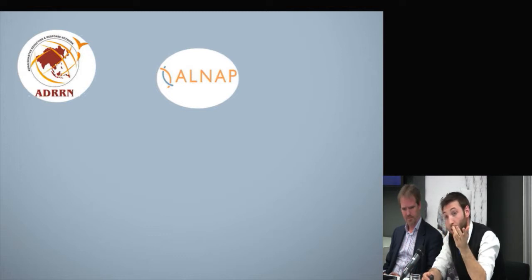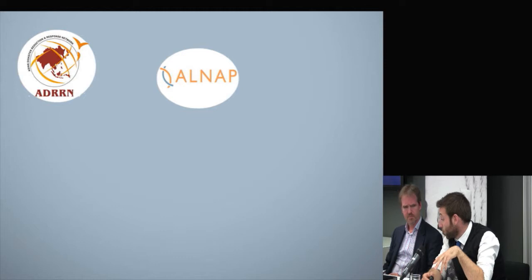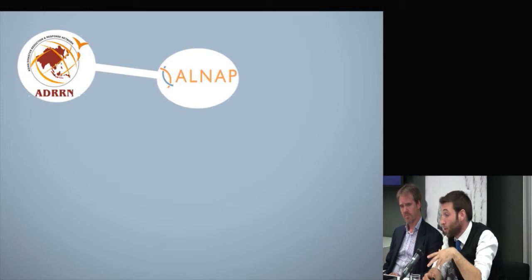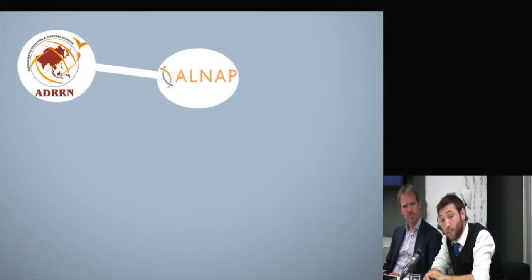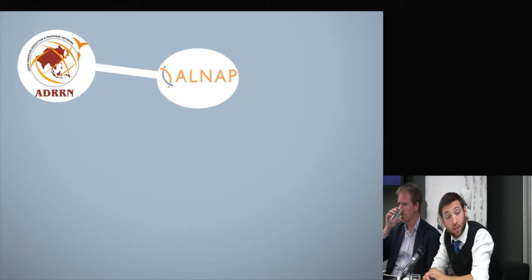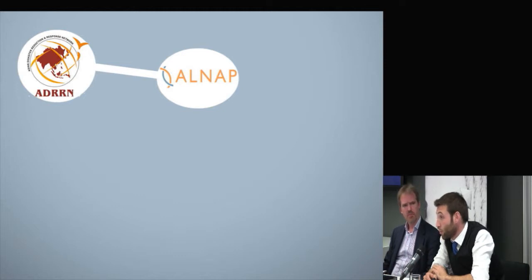This research comes out of an ongoing collaboration between ALNAP and ADRN, which has been one of the most interesting and inspiring relationships ALNAP has had. ALNAP is a network of international humanitarian actors — NGOs, the Red Cross movement, the UN, donors, and increasingly non-system actors like governments in affected states. ADRN, the Asian Disaster Reduction and Response Network, is a network of about 35 organisations all headquartered in Asia, mostly national NGOs working in one country.